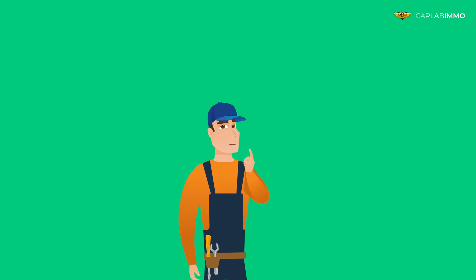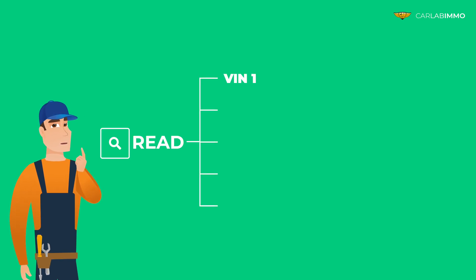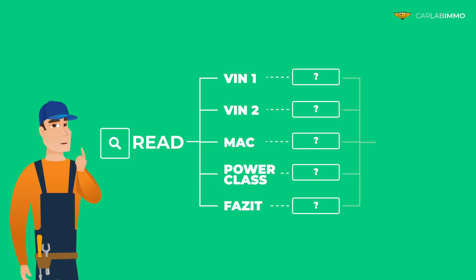Have you ever wondered what is the easiest way to read VIN 1, VIN 2, MAC, power class, and facet values of the IMMO 6 Bosch engine control unit that you're working on?